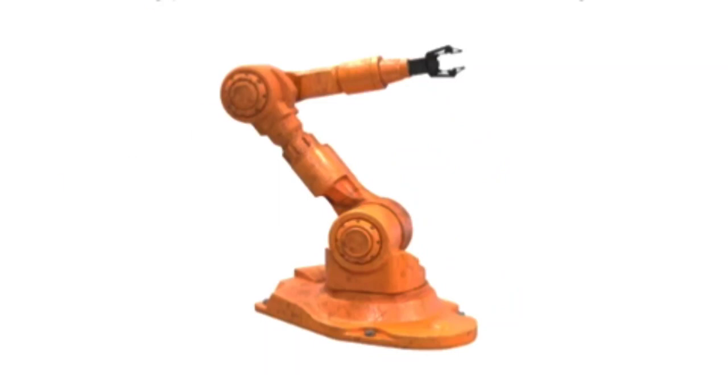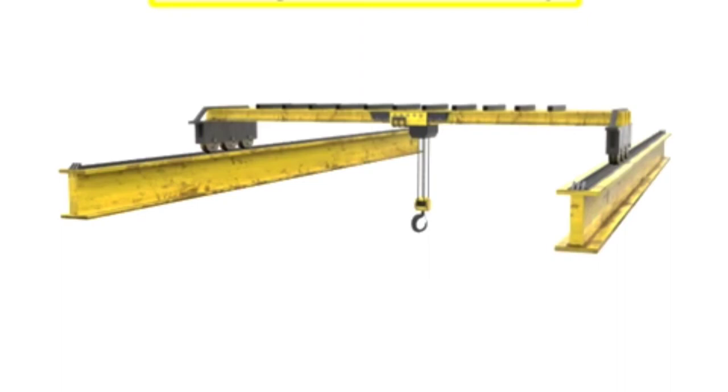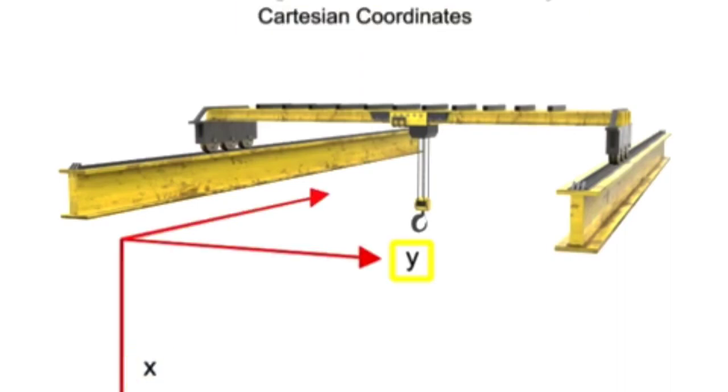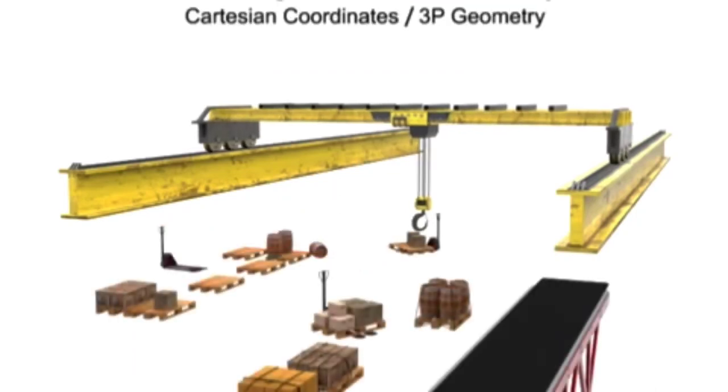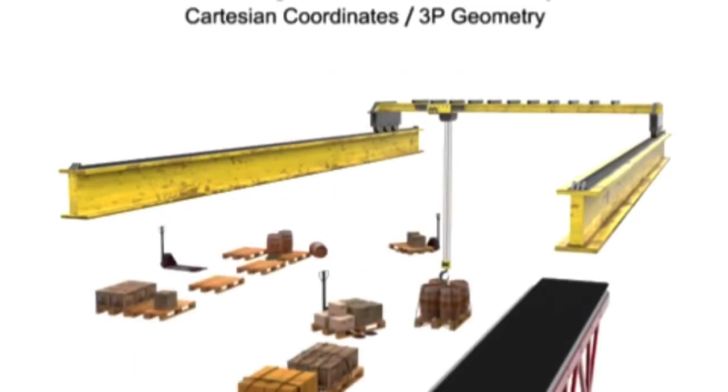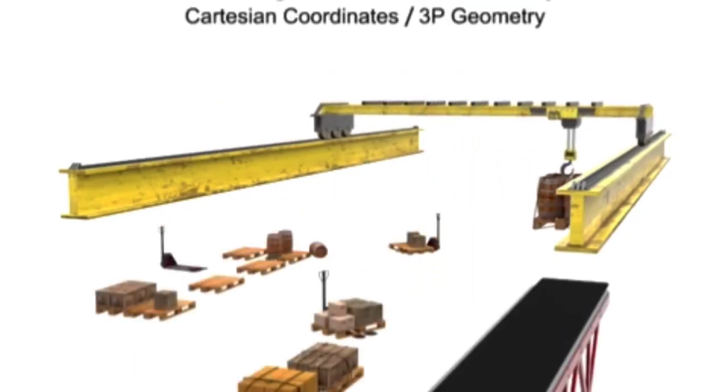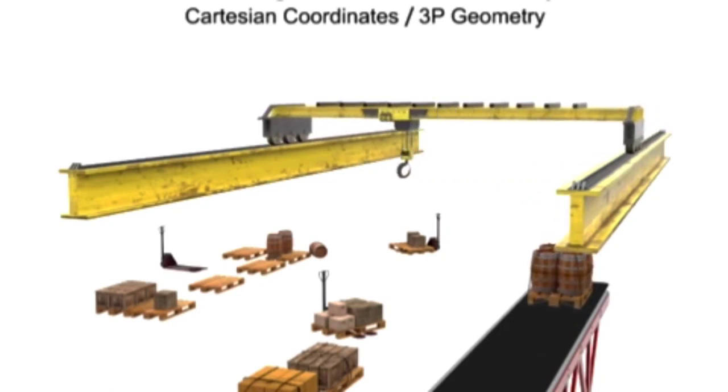Robots with rectangular arm geometry use Cartesian coordinates and move linearly along each of the X, Y, and Z axes. This type of movement is also called 3P geometry, where the P stands for prismatic or linear motion. This type of geometry is most commonly used with pick-and-place or large overhead-mounted robots.